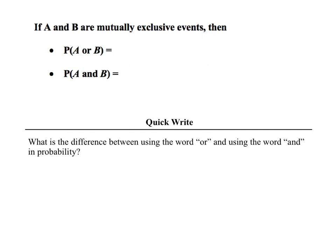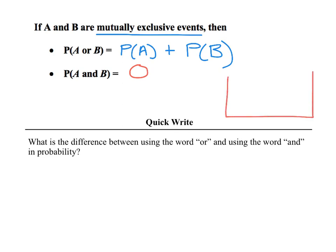So with mutually exclusive events — events that cannot happen at the same time — to calculate the probability that event A or B happens, you add together the probability of event A plus the probability of event B. If they're mutually exclusive and you want them to both happen at the same time, that probability is going to be equal to zero because it's impossible.